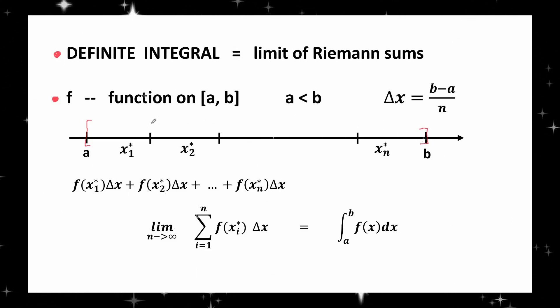Step 1: Divide the interval [a, b] into n subintervals of equal length. Each subinterval has the length Δx, which is (b - a) divided by n.